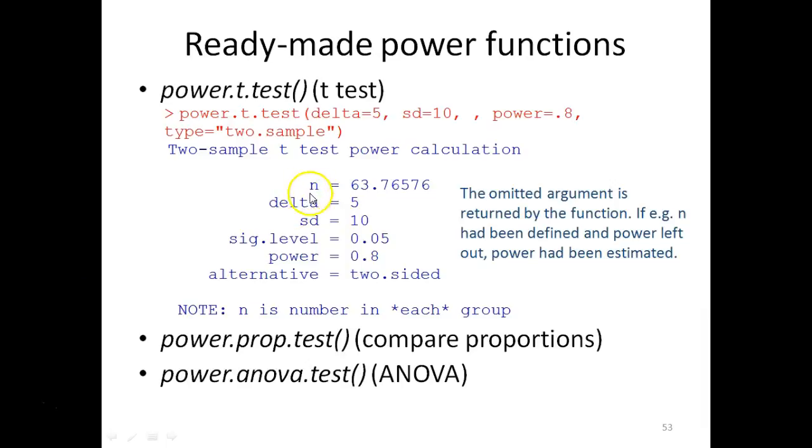As you can see, you have these parameters, and by simply omitting one of them, the power.t.test will return that one. So if, for example, you would like to have a power of 80%, then you would simply omit the n, which is the group size, and R would return this information, the data that you have provided, and n, which is the group size in each group. And then you are supposed to have two groups because you are performing a two-sample t-test.